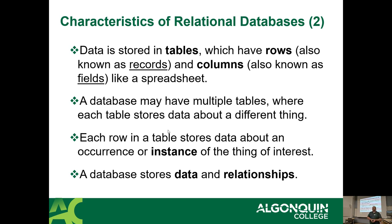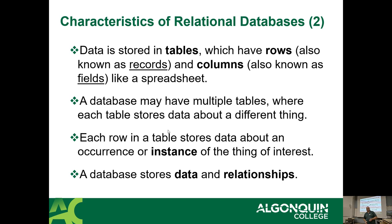In a relational database, data is stored in tables. Tables have rows — also known as records — and columns, also known as fields. It looks like a spreadsheet. A spreadsheet is a grid of columns and rows. A table is basically a series of columns that are defined and have names, and each column contains a specific kind of information. Any collection of those columns for one entry is known as a row. A database may have multiple tables, and each table stores data about different things.